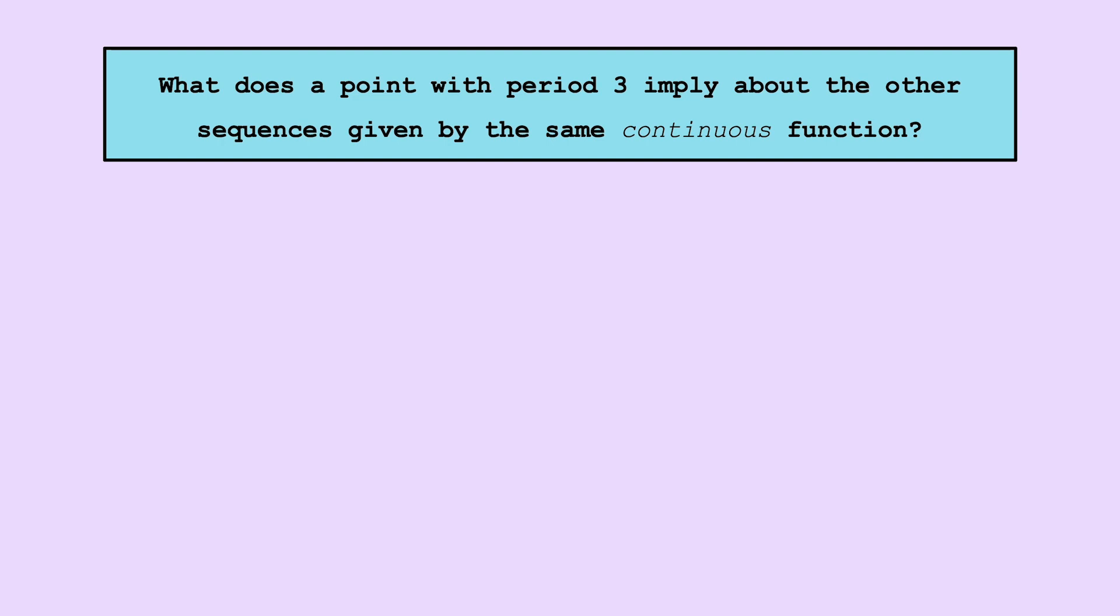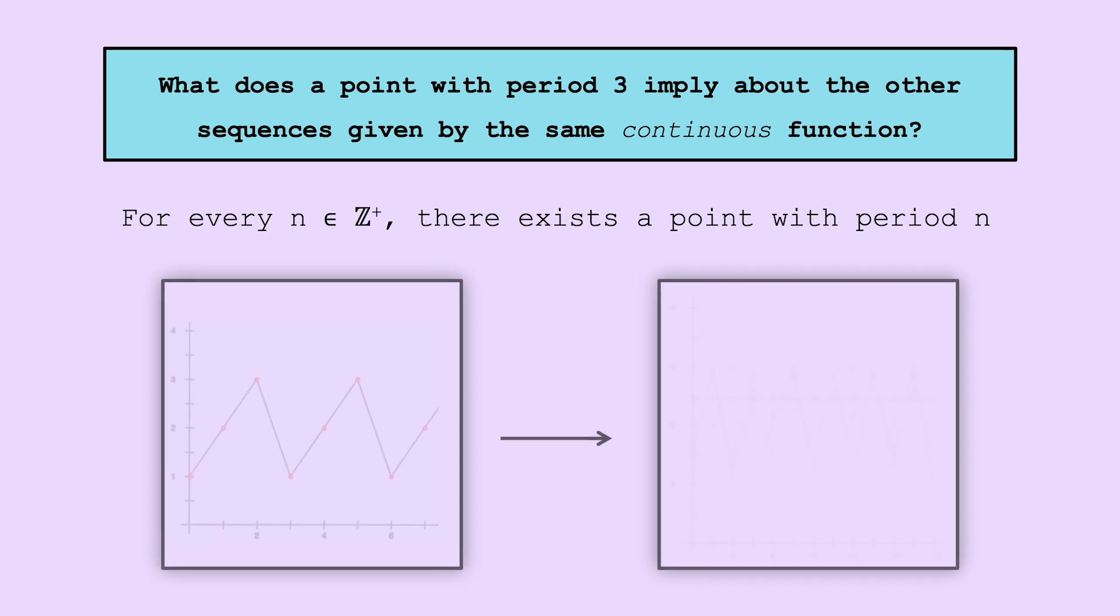It turns out, this new continuous condition guarantees there exists a point with every period possible. That is to say, there's a point with period 5, a point with period 2023, a point with period equal to the number of views of this video, and in general, for every positive integer n, there exists a point with period n.